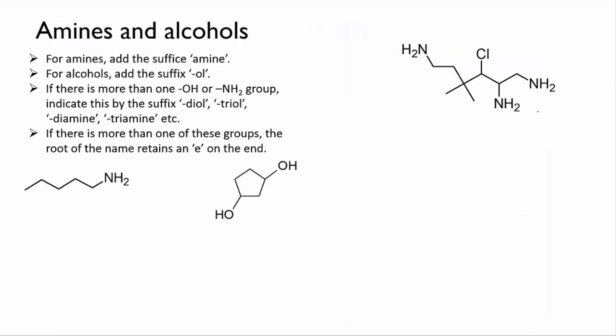Let's try these examples. First, we've got a simple amine. First, identify the main chain. There are five carbons, so it's based on pentane. But the end carbon has an amine group attached, so the name is changed from pentane to pentanamine.